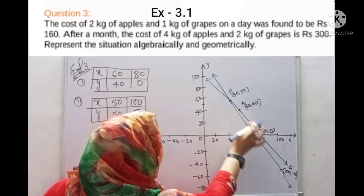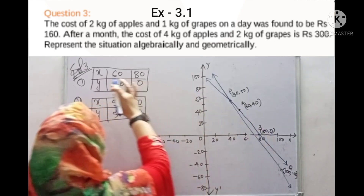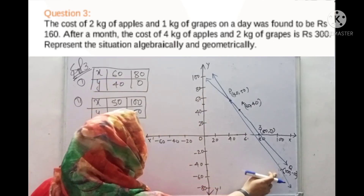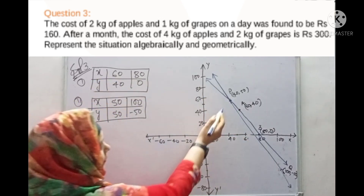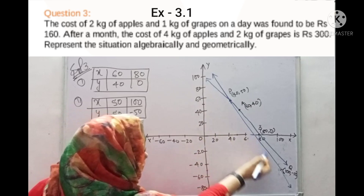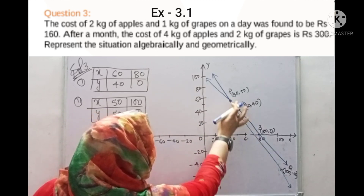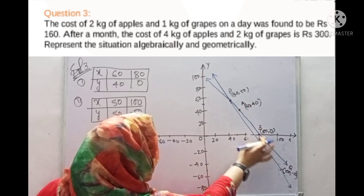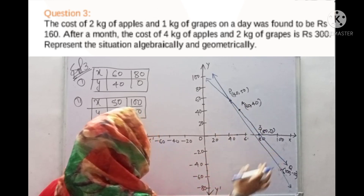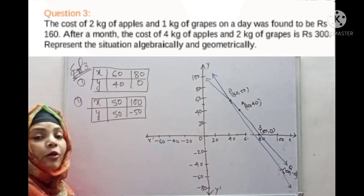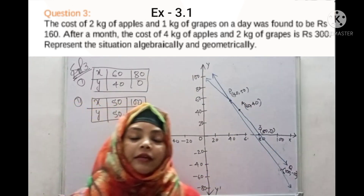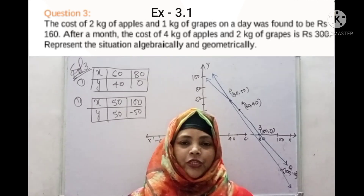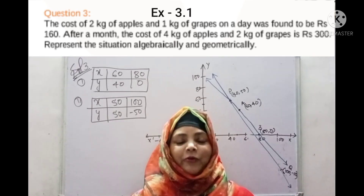So A and B form the first equation's line, and P and Q form the second equation's line. We have now graphically represented both equations. I hope you understood it.